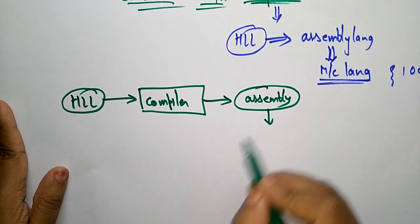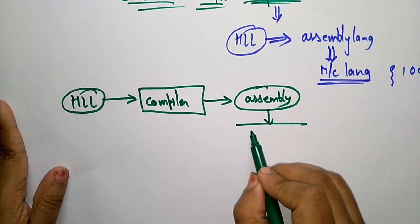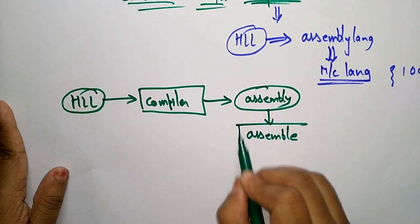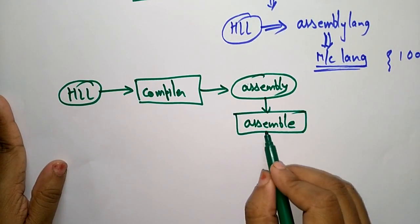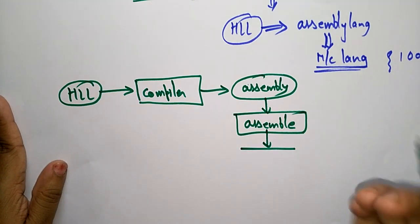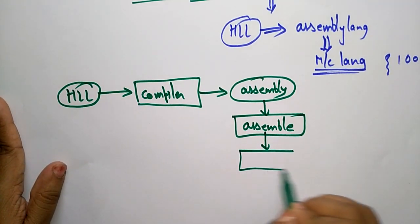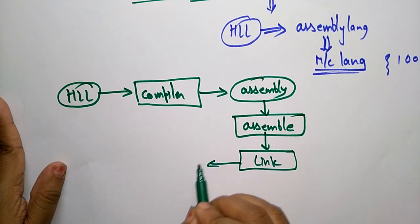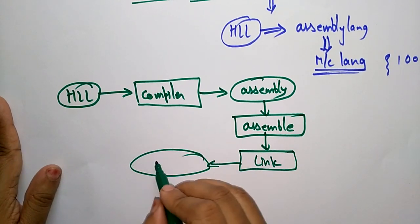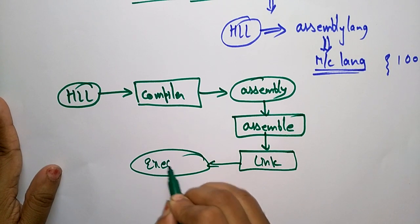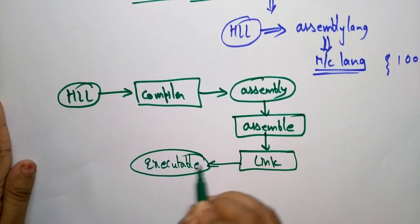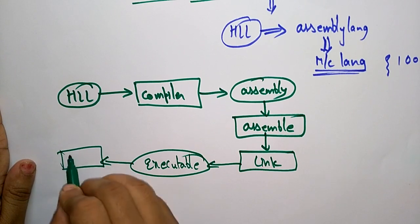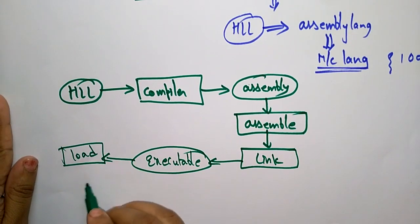So after that, the assembly is assembled. Whatever is converted into assembly, that object file is going to be linked. After linking, you will get the executable file. That executable file is going to be loaded in the chip.